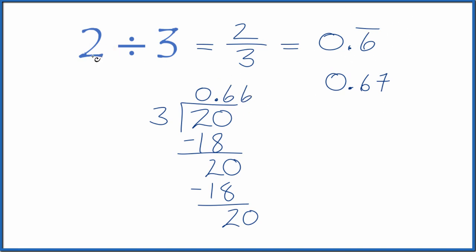This is Dr. B dividing two by three. The answer as a fraction is two-thirds, or as a decimal is 0.6 with a bar to show it's repeating. Some people do round this, though, to 0.67.